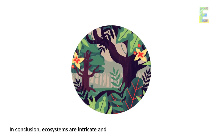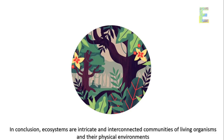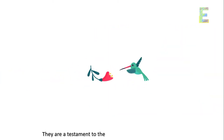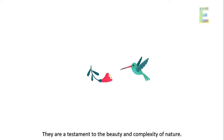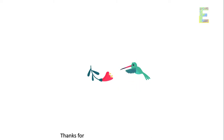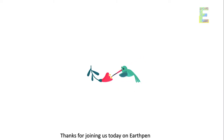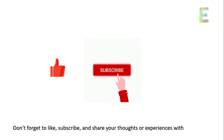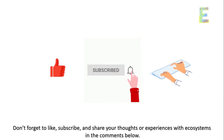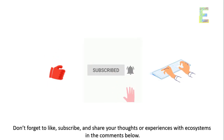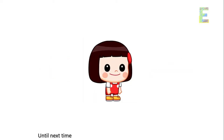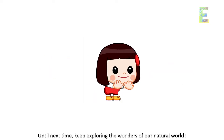In conclusion, ecosystems are intricate and interconnected communities of living organisms and their physical environments. They are a testament to the beauty and complexity of nature. Thanks for joining us today on EarthPen. Don't forget to like, subscribe, and share your thoughts or experiences with ecosystems in the comments below. Until next time, keep exploring the wonders of our natural world.